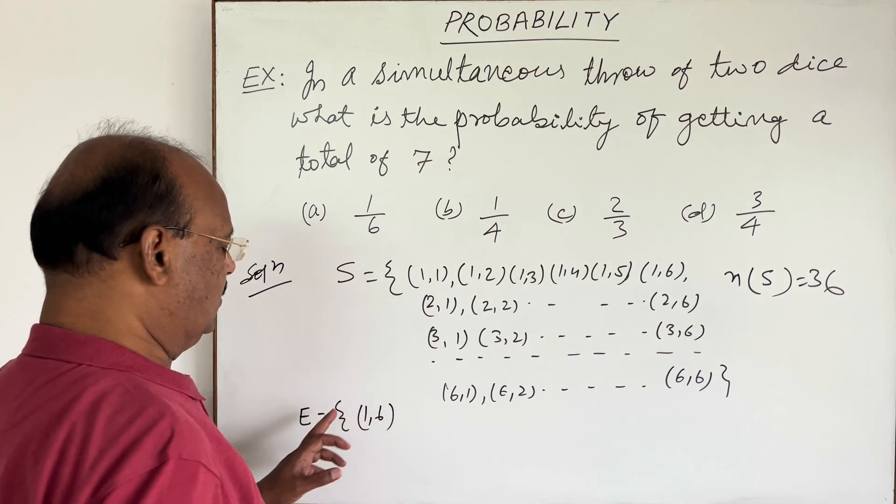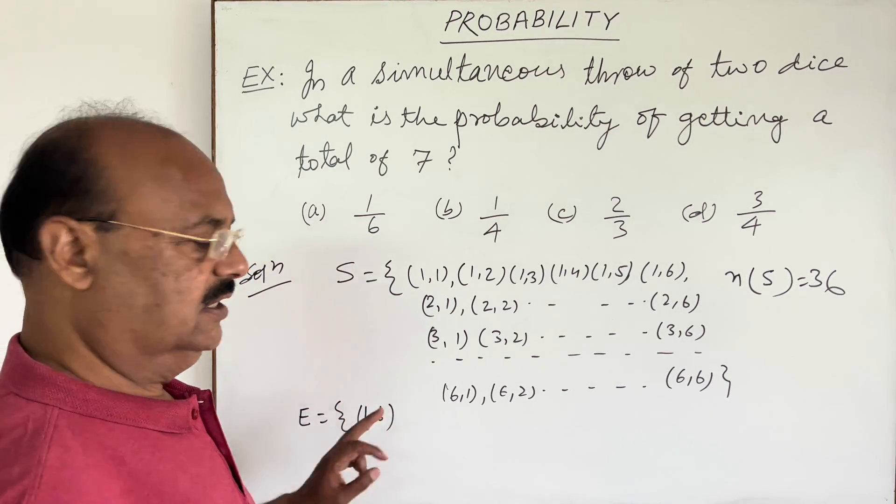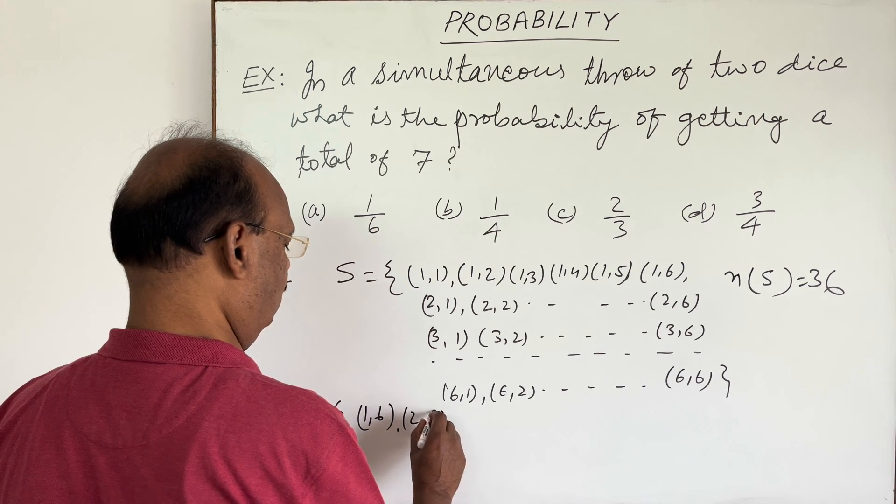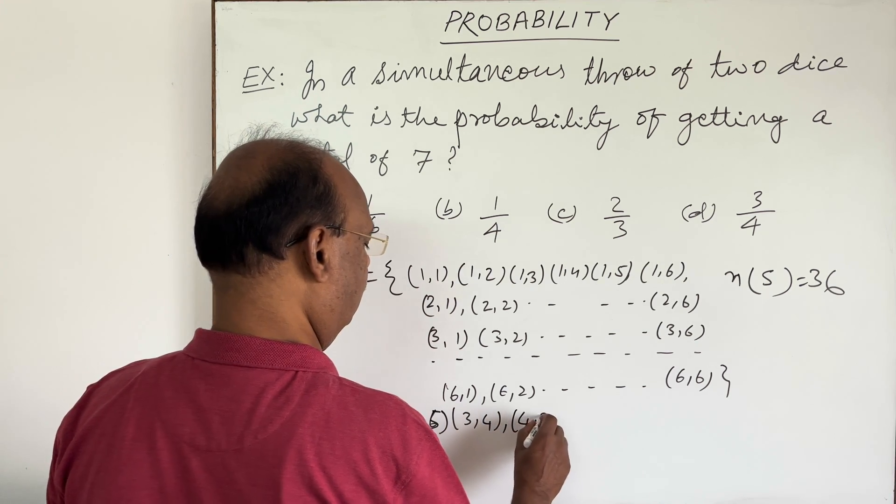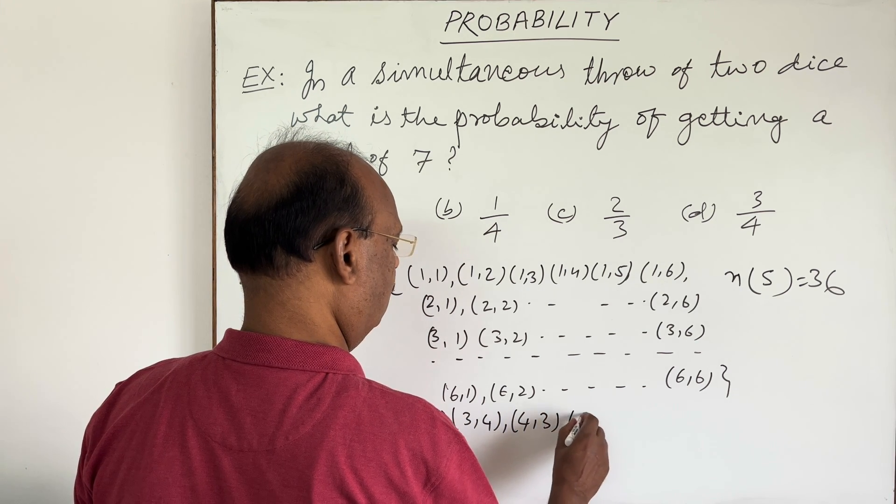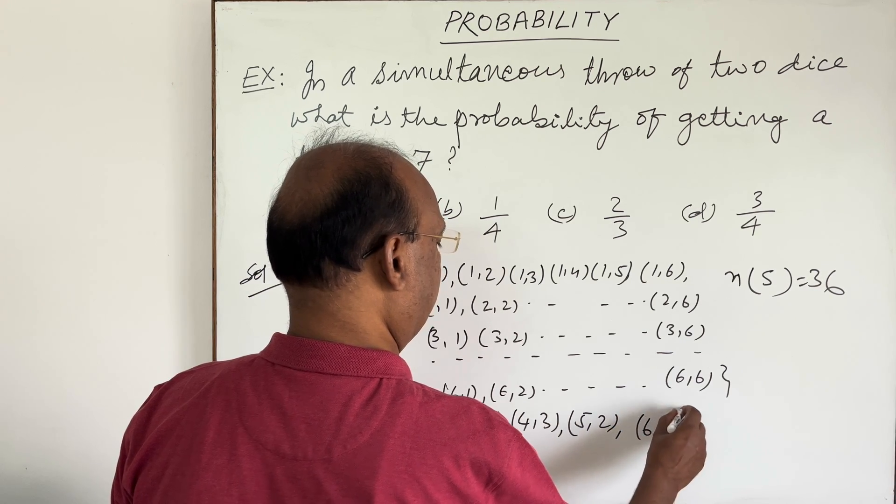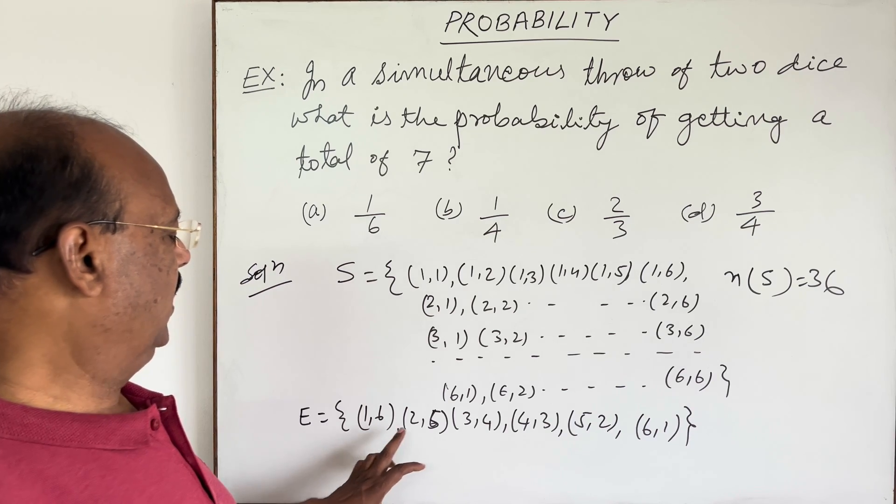That may be (1,6) meaning one appears in the first dice and six in the second. Similarly (2,5), (3,4), (4,3), (5,2), and (6,1). Total elements in this event is six.